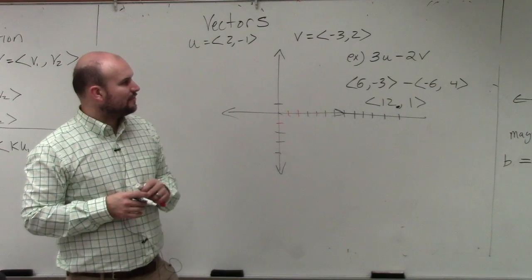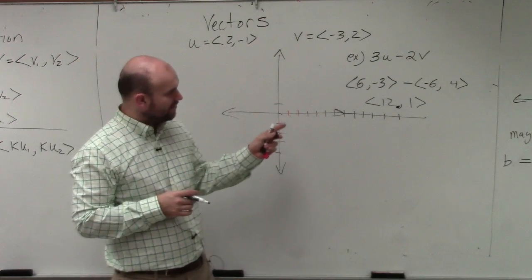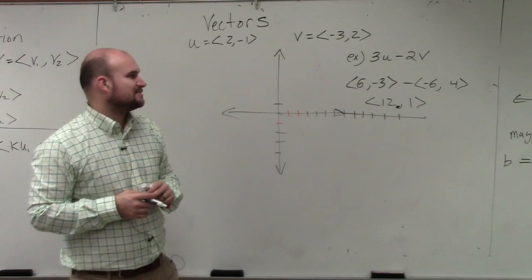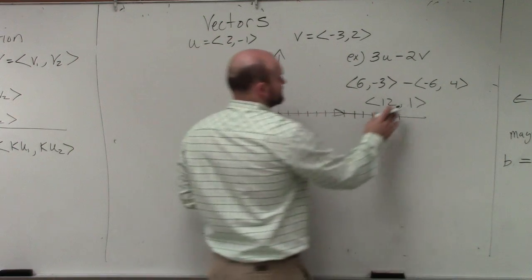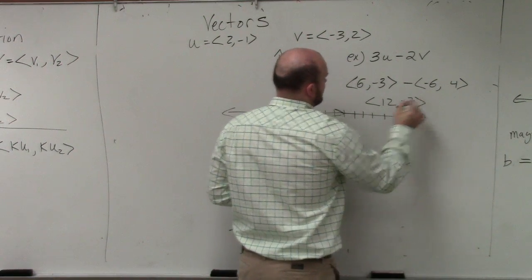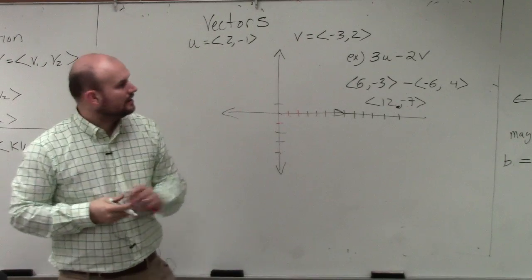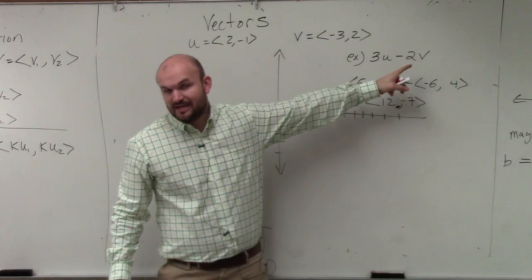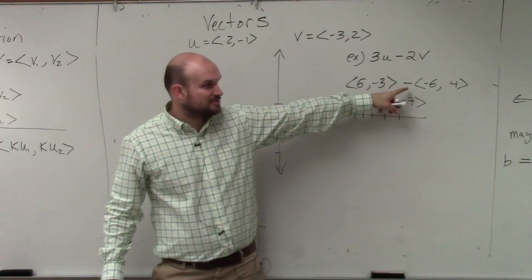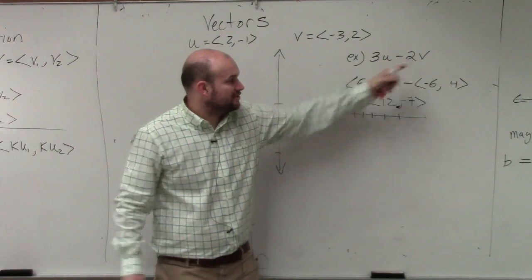That still should be positive 4, but then that should be negative 4. So it should be negative 3 minus 4, which is negative 7.